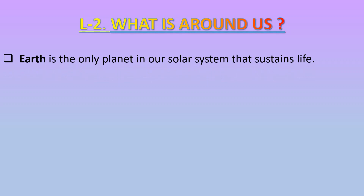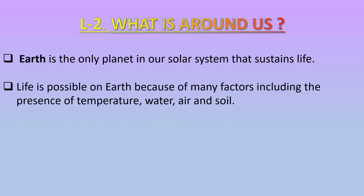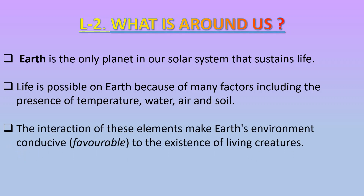You know that in our solar system, Earth is the only planet that sustains life. Life is possible on Earth because of many factors, including the presence of temperature, water, air and soil. The interaction of these elements makes Earth's environment conducive — meaning favorable to the existence of living creatures.